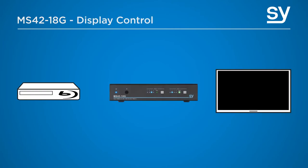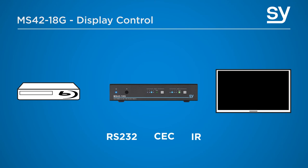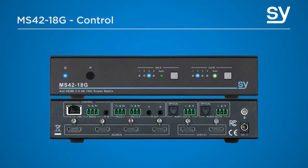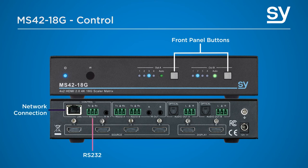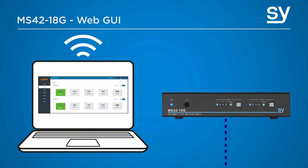There is also a display control function offering events control. The SY-MS4218G can automatically control the connected display device using RS-232, CEC or IR. It can power on the display when the signal is connected and then later power off the displays when the last input signal is lost. For controlling the MS-42 unit itself, there is a choice of control options: front panel buttons, RS-232, LAN control or IR. The unit has a built-in web GUI which offers direct LAN control of its many functions, settings and signal routing choices.